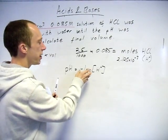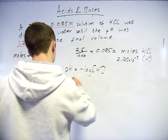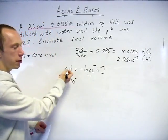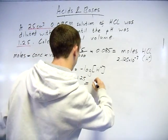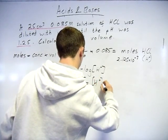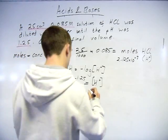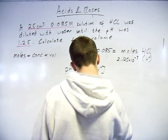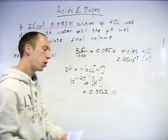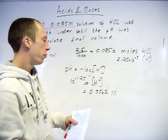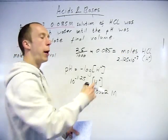pH equals minus log concentration of hydrogen ions. Because it's a strong acid, the values will be almost equal in terms of the amount of moles, so the concentrations. Take the antilog of the pH - remember negative as well - and that comes out as 0.0562 molar concentration.